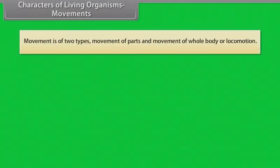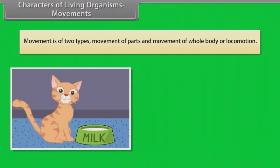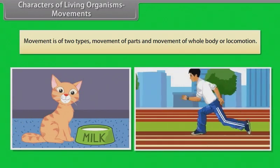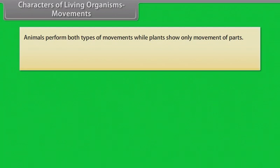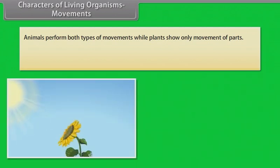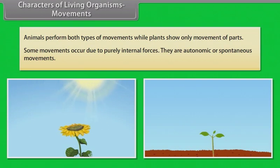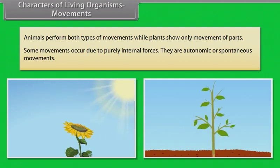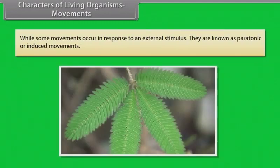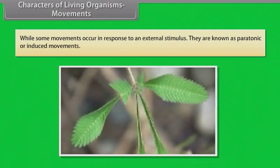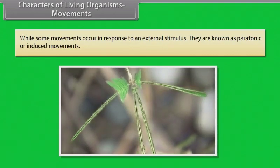Movement is of two types: movement of parts and movement of whole body or locomotion. Animals perform both types of movements while plants show only movement of parts. Some movements occur due to purely internal forces. They are autonomic or spontaneous movements. While some movements occur in response to an external stimulus. They are known as paratonic or induced movements.